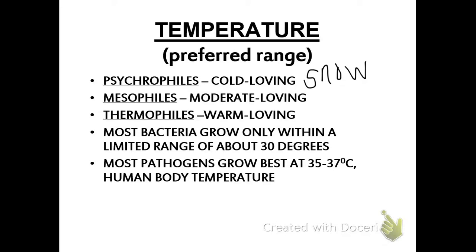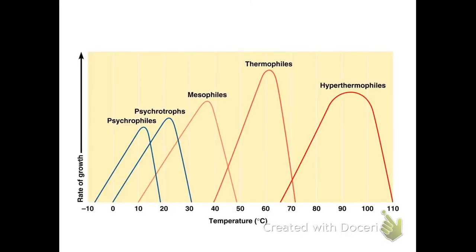Most bacteria have a range of about 30 degrees, so they can live at 70 degrees Fahrenheit. That's their optimum. Optimum is the best. But they can live at 85, and they can live at 55. Anything outside of that, they're going to die. Most pathogens grow well at human body temperature, unfortunately. Bacteria like warm, moist places.